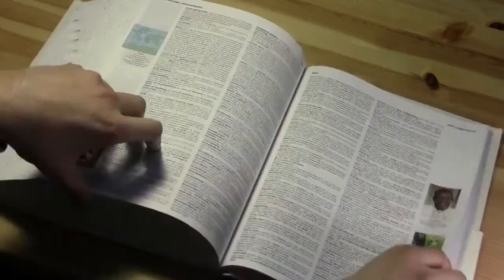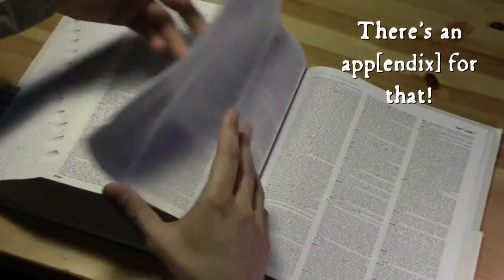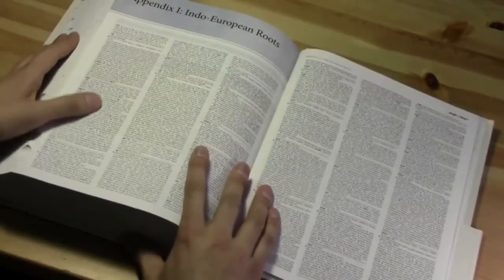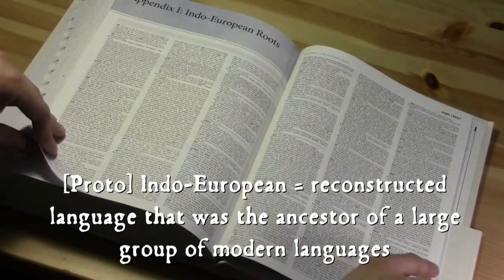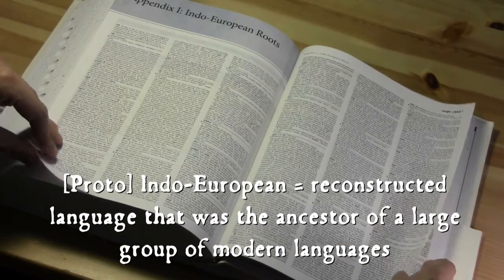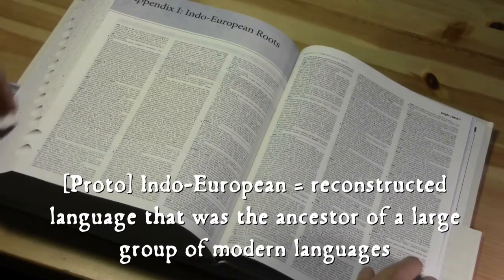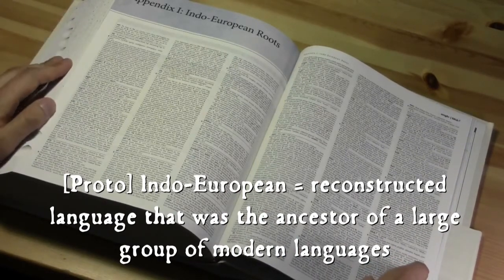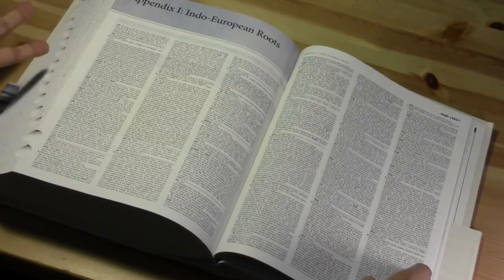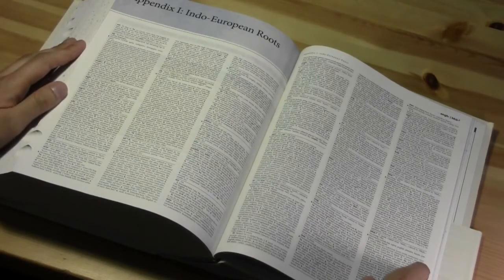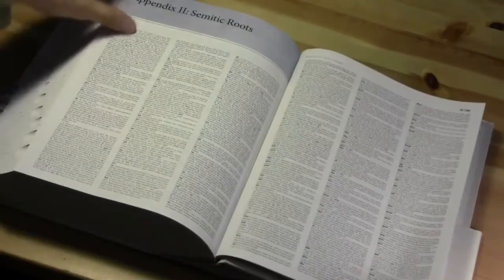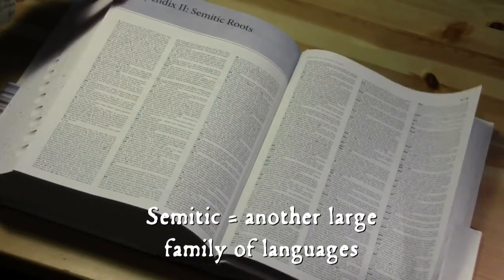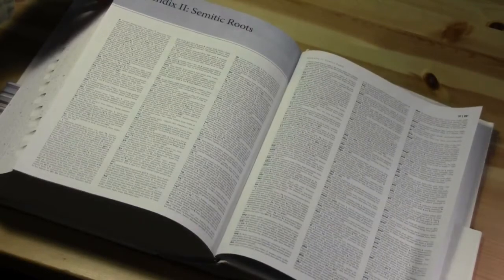And it is also notable for its appendix. So if we flip to the end of the book, so this is Appendix One, Indo-European Roots. So this lists all of the Indo-European roots that are connected to the etymologies in the main part of the dictionary. So the main part of the dictionary will give you the etymology and then it will point you to the Indo-European root which you can then look up in the back of the book. There it is, Semitic Roots. So that wasn't there in the first edition. That didn't come in until the fourth edition, but we have it here in the fifth edition as well.